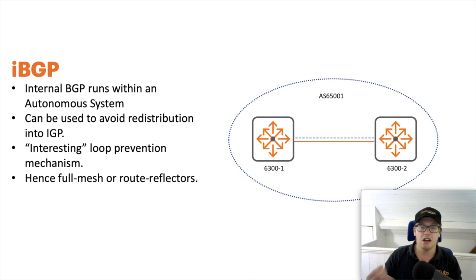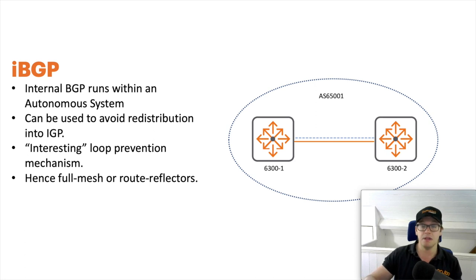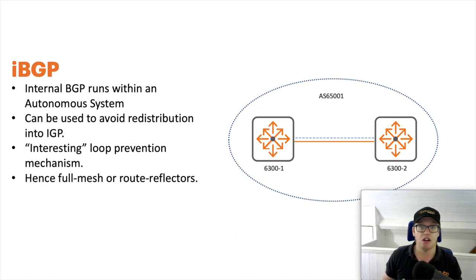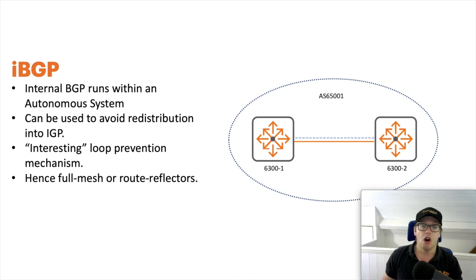So if you've got a device within an AS injecting a route, that will be forwarded onto its iBGP peer, and if you have an eBGP-learned prefix that will also be forwarded onto an iBGP peer. But if it's iBGP-learned, it won't go on to another iBGP peer within the same AS, because that could cause a loop. That's why with iBGP you need a full mesh — all iBGP speakers should have BGP connections to each other — or you can deploy route reflectors or confederations, but those are more advanced topics.